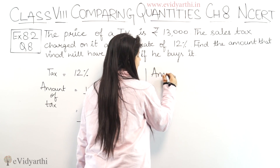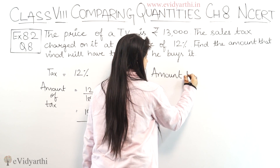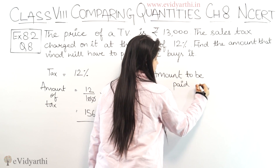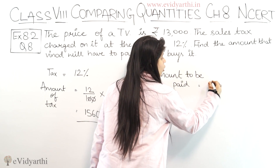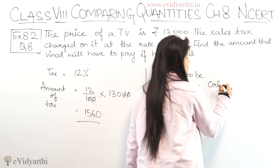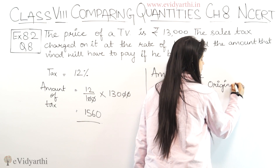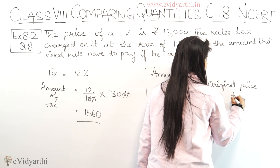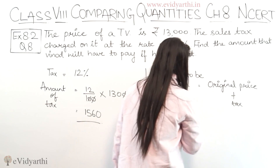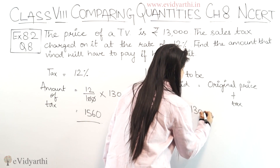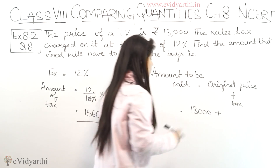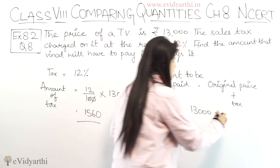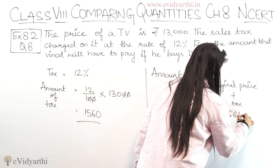The amount to be paid will be the original price plus the tax. So the original price is 13,000 plus the tax we found, which is 1,560.